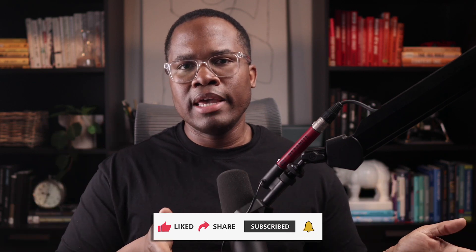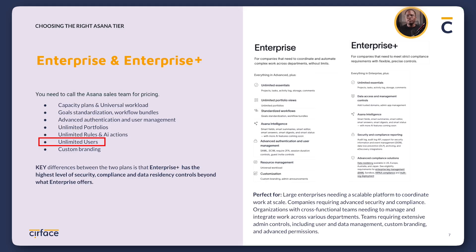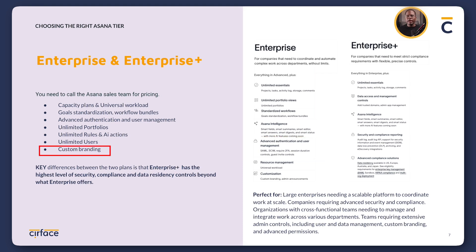On the Enterprise plan, you get all previously mentioned features plus unlimited users and portfolios with no restrictions. You also get integrations like Salesforce bi-directional sync, and connections to Tableau or Power BI for more advanced reporting. This plan includes enhanced security features like SAML and SCIM, plus custom branding so you can add your logo and change the look and feel of your Asana instance.